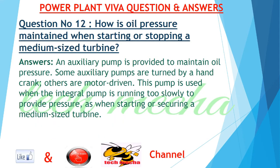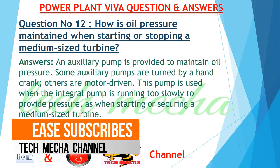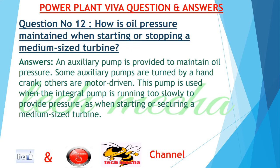Question number 12: How is oil pressure maintained when starting or stopping a medium-sized turbine? Answer: An auxiliary pump is provided to maintain oil pressure. Some auxiliary pumps are turned by a hand crank; others are motor driven. This pump is used when the integral pump is running too slowly to provide pressure, as when starting or securing a medium-sized turbine.